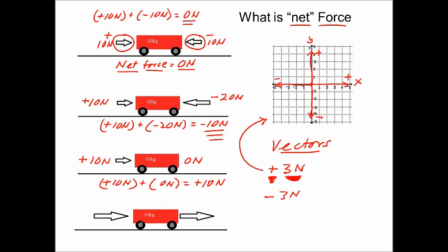Here's one more cart. We have two forces acting on it, both in the same direction. I'll give each a value of positive 30 newtons. Setting up the problem: positive 30 newtons plus positive 30 newtons gives us a net force of positive 60 newtons — meaning the sum of the forces acting on this cart is 60 newtons to the right. Go back through the problems, make sure you understand what net force is, and then we'll take a look at a couple of practice problems.